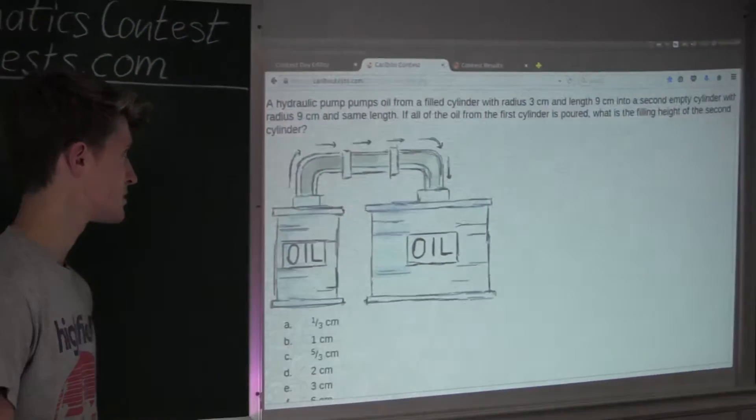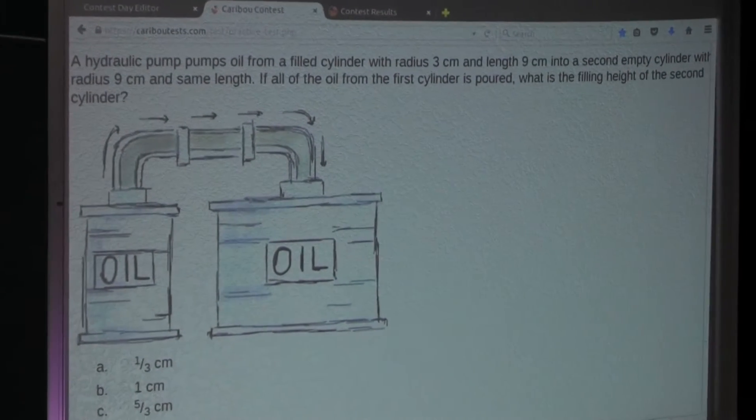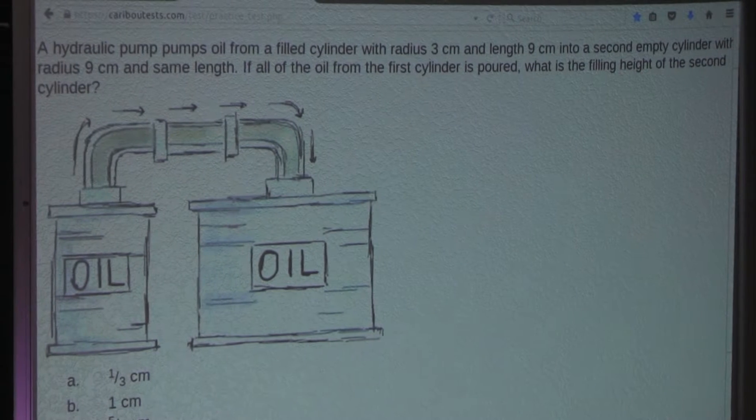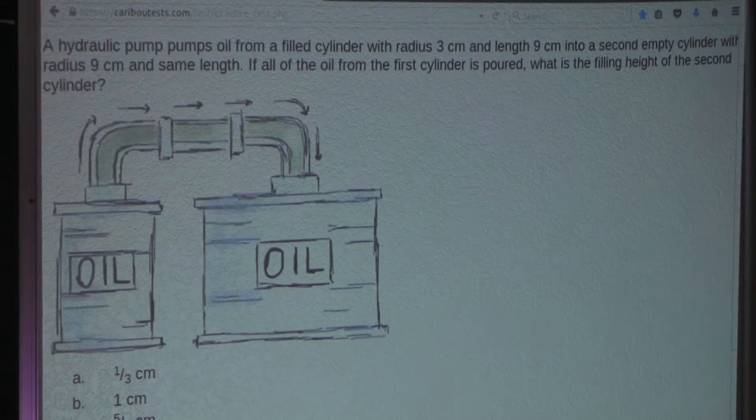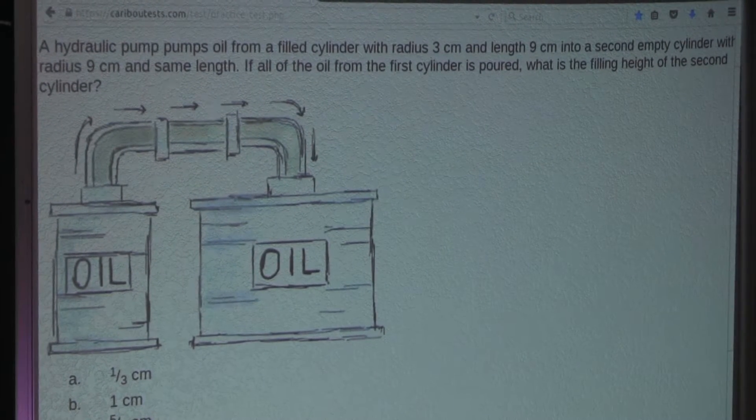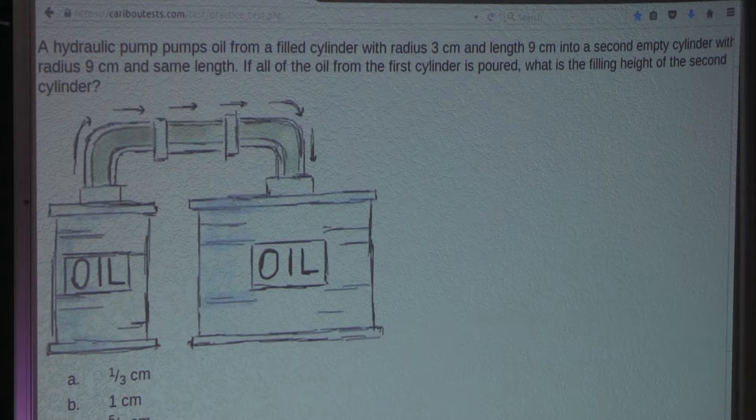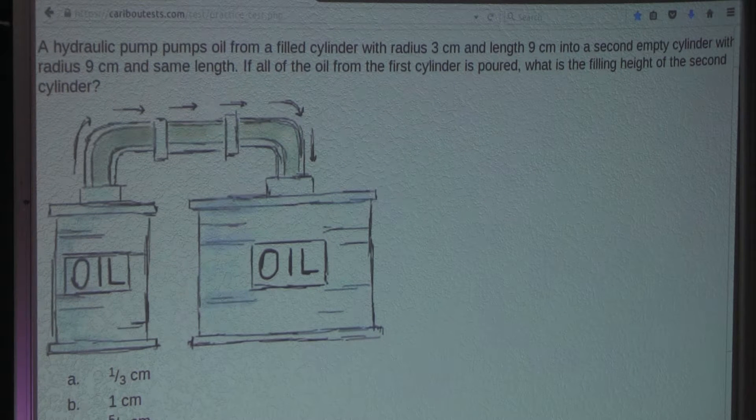So the question is, a hydraulic pump pumps oil from a filled cylinder with radius 3cm and length 9cm into a second empty cylinder with radius 9cm and same length. If all of the oil from the first cylinder is poured, what is the filling height of the second cylinder?